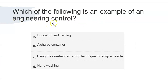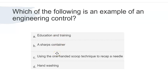Question: Which is an example of an engineering control? A: education and training; B: sharps container; C: using a one-hand scoop technique to recap a needle; or D: hand washing? The answer is B: a sharps container. Engineering controls are devices or equipment made to reduce or eliminate hazards — they protect you from exposure to blood or infectious material from sharp instruments. A sharps container is man-made and prevents puncture injuries.